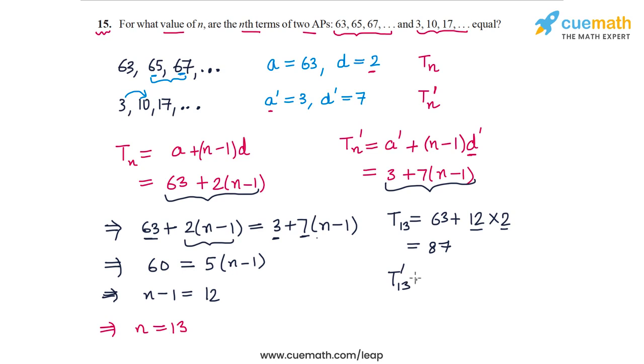And the thirteenth term of the second AP will be the first term, 3 plus (n-1), that's 12 again into D is 7 in this case. So 12 into 7 is 84. 84 plus 3 is 87. So the thirteenth terms of both APs are equal and both are equal to 87.